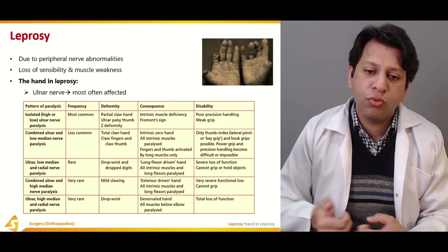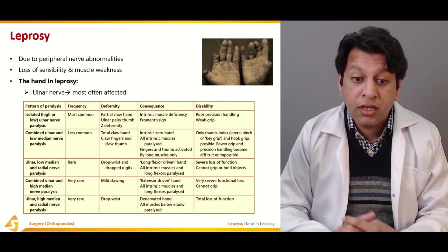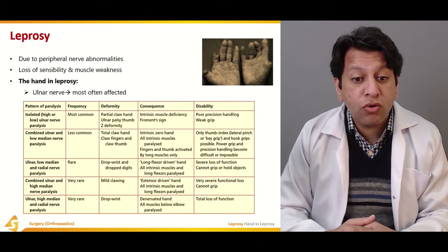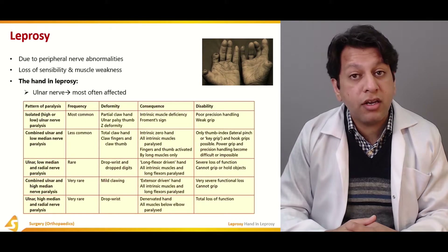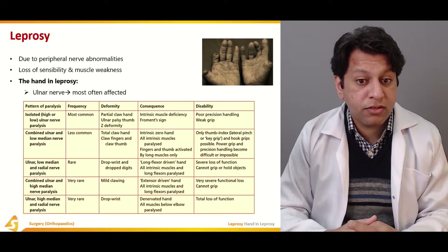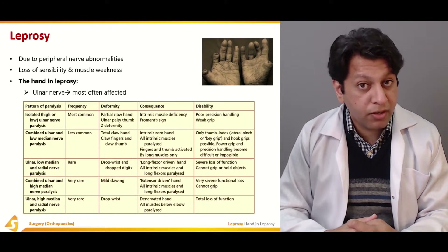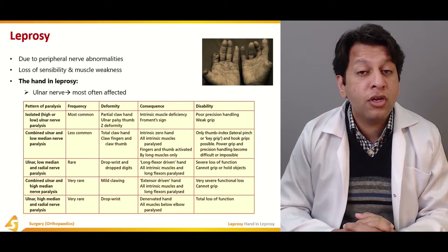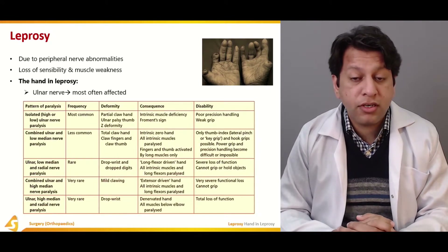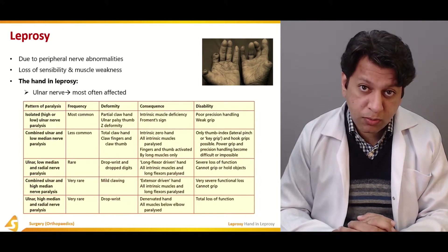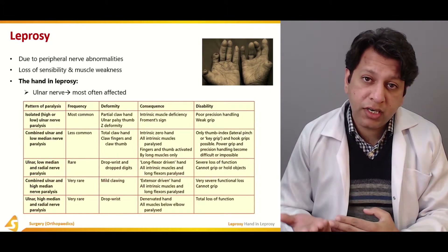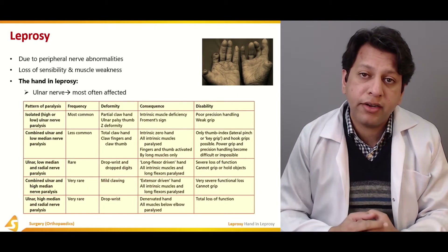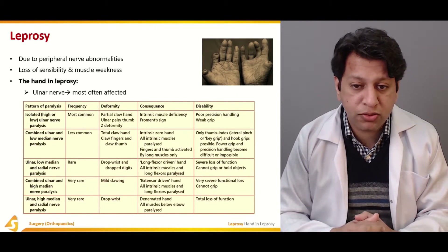A third, very rare pattern involves combined ulnar, low median, and radial nerve paralysis. This results in drop wrist and drop digits, as the radial nerve injury is added to the combined median and ulnar nerve involvement.